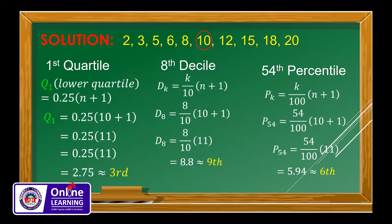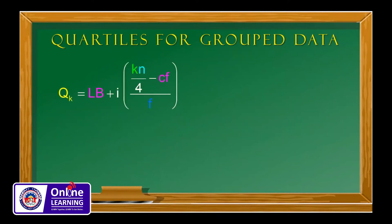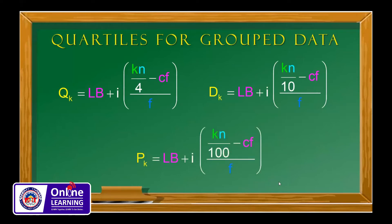Now let's look at the formulas for grouped data. For quartiles: Q sub k = lb + i × [(kn/4 − cf) / f], where lb is the lower boundary, i is the interval, cf is the cumulative frequency, and f is the frequency. For deciles: D sub k = lb + i × [(kn/10 − cf) / f]. For percentiles: P sub k = lb + i × [(kn/100 − cf) / f].